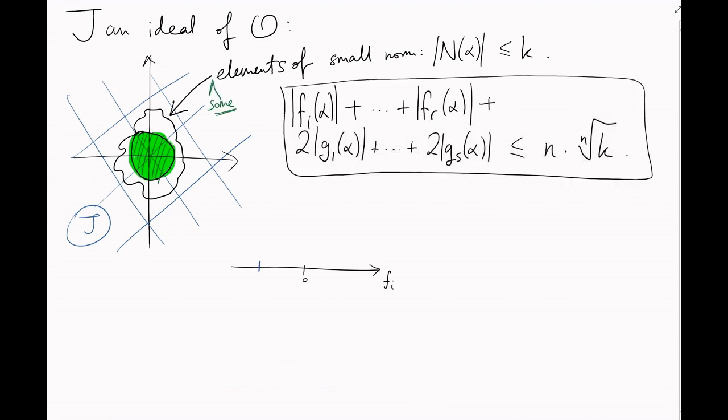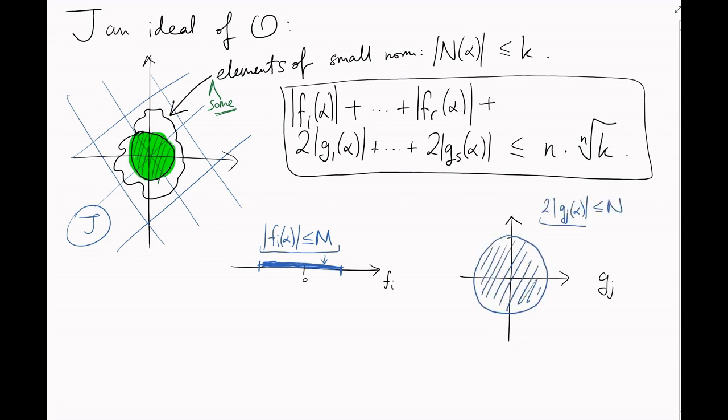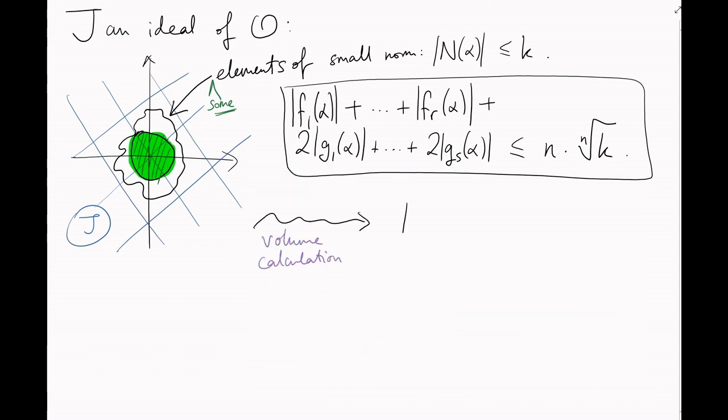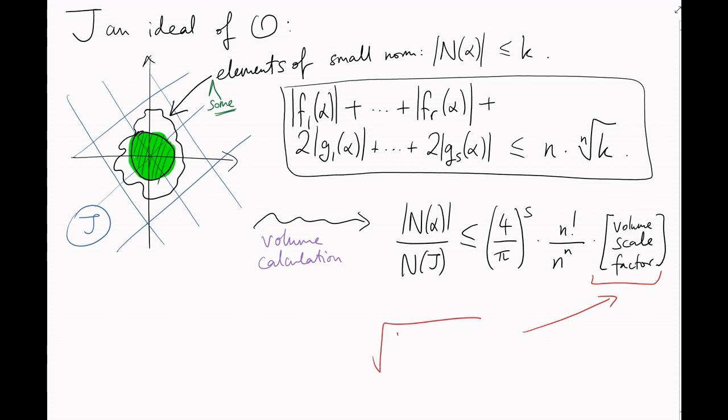Just like our previous pictures, the real embeddings give you lines and the complex embeddings give you circles and they're stitched together somehow. After a long, tedious calculation to find the volume of this bubble later, we get the Minkowski bound. 4 over pi to the s times n factorial divided by n to the n times a volume scale factor. This scale factor is the square root of a number called the discriminant of O.